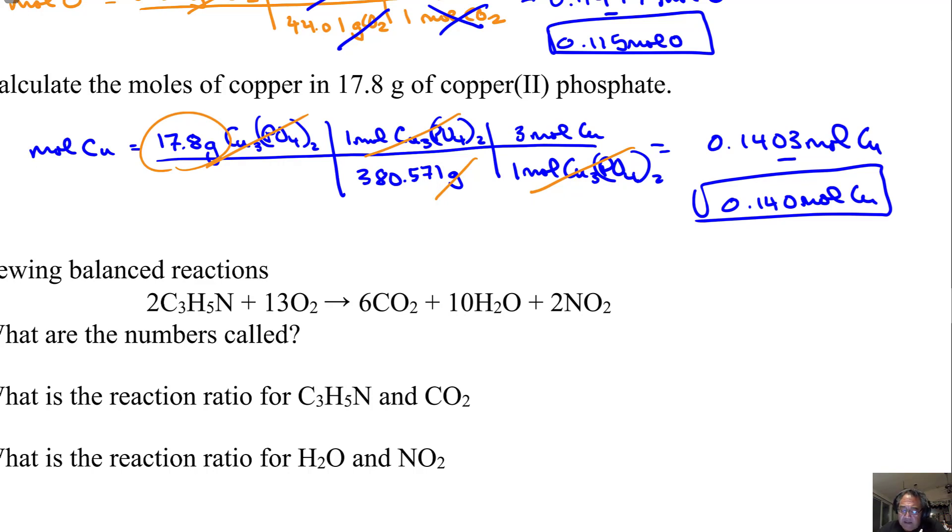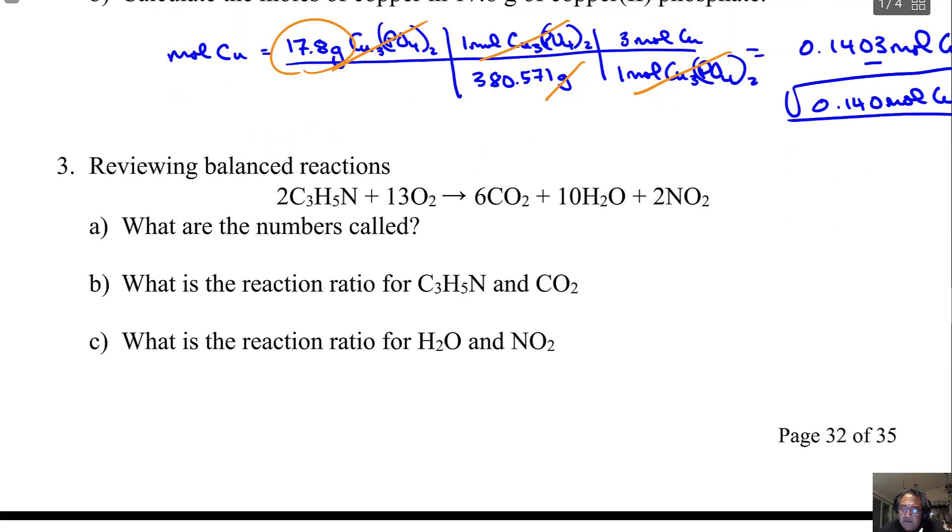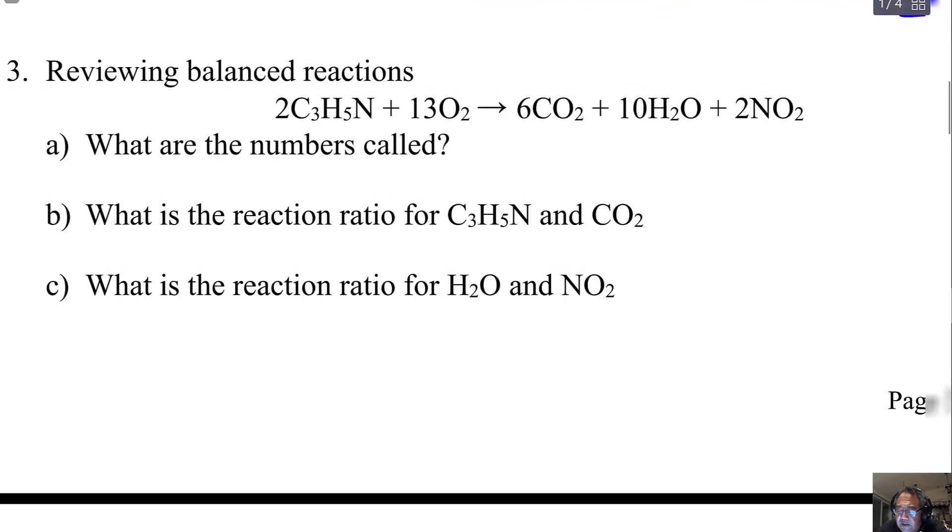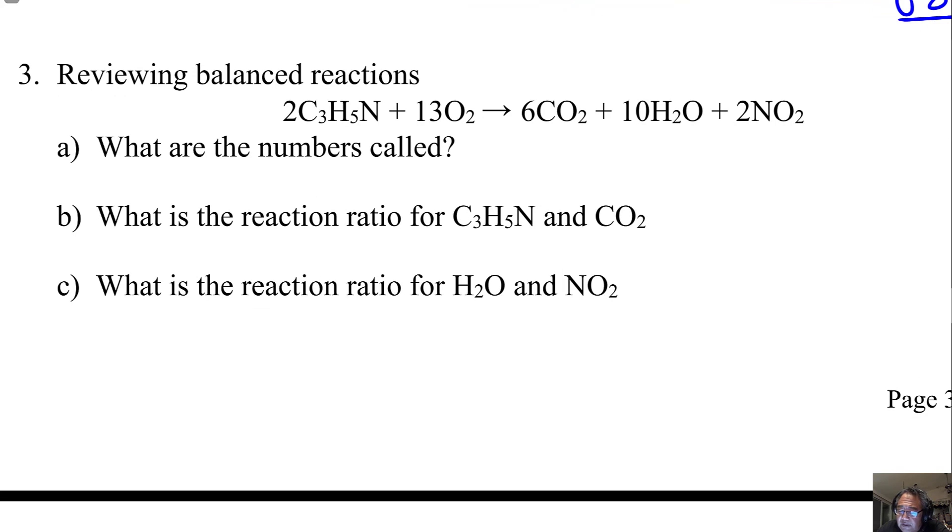So the next thing to do is to balance an equation. I've got one balanced here for you, this is probably a more complicated one. I want to review a couple of things about the balanced chemical equation. The numbers that give us mass balance, these numbers are called stoichiometric coefficients.